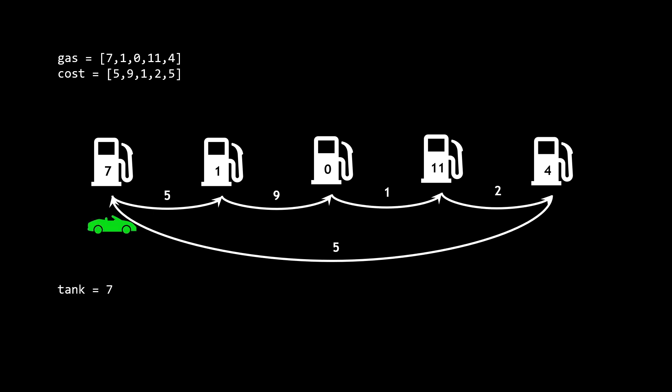So, let's take this example. We start on the first gas station, and we start off with six units of gas. It then makes the trip to the second gas station, costing us five units of gas, which means we now have two units left in our tank. Upon arriving at the next gas station, we are given one unit of gas, so now we have three units. Now, we attempt to make the trip to the next gas station. However, since this trip requires nine units of gas, but we only have three in the tank, we run out of gas along the way, leaving us stranded.